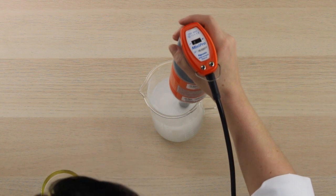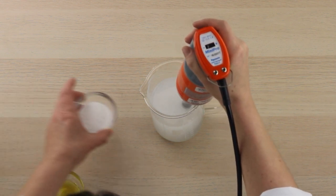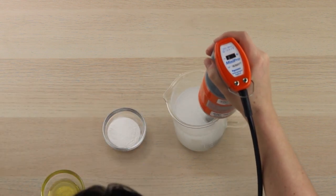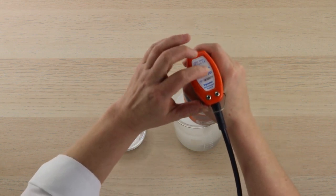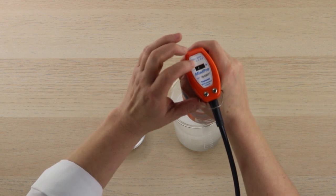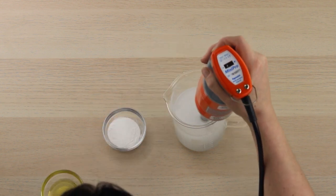And then we're going to take our hyaluronic acid and add that slowly, sprinkling it into the water. And as you add it, your water is going to start to thicken, so you may have to turn up the speed on your mixer.